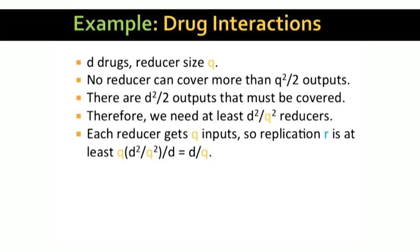The replication rate is the number of reducers, that's D squared over Q squared, times the number of inputs per reducer, that's Q, divided by the total number of inputs, which is D. That gives us R greater than or equal to D over Q.